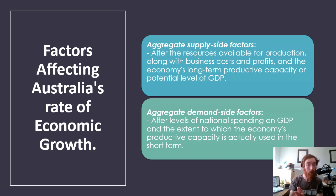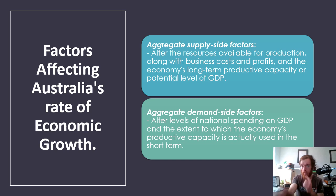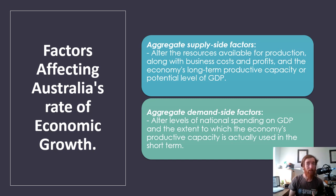For example, wages are aggregate supply side because that is a cost of production for businesses. Aggregate demand side is all about the consumer — it's about things that impact the amount consumers are spending on goods and services. If aggregate demand increases, consumers are spending more money, creating more demand for goods and services, which leads to businesses producing more to meet that demand. Aggregate demand side factors alter the levels of national spending on GDP and the extent to which the economy's productive capacity is used in the short term.